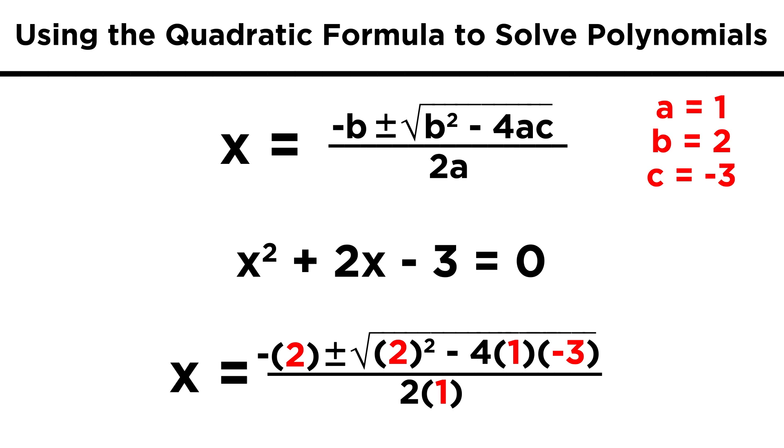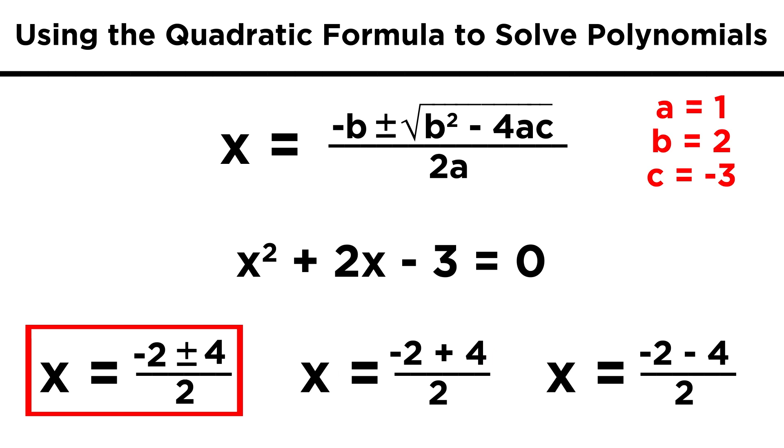A is one, b is two, and c is negative three, so let's just replace all of these variables with the corresponding numbers. Now we just simplify step by step. Let's combine everything under the radical to get sixteen. Take the square root, which is four, and now we have two answers.